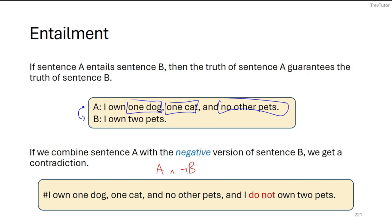So if we're saying A is true, but B is false, then yeah, we should get a contradiction. So I own one dog, one cat, and no other pets, and I do not own two pets. This is a contradiction, because we're saying one dog, one cat, that's two pets, no other pets. So it is exactly two.